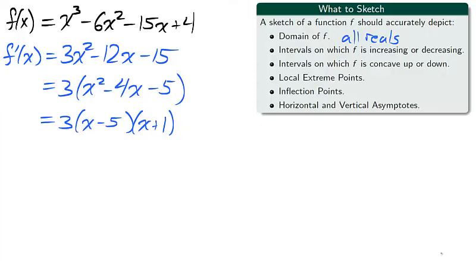From the simplified first derivative, we are quickly able to identify critical numbers, those points for which the derivative is 0 or does not exist. A polynomial is differentiable at all points, so x equals 5 and x equals negative 1 are the only critical numbers of f.